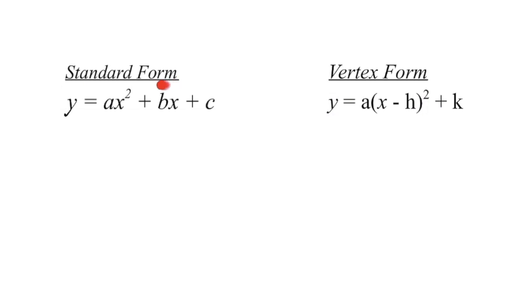Standard form is one way that we can write a quadratic function, and vertex form is another. We can see that in each of those functions they have an independent variable x and a dependent variable y. They also each have a variable a, and a does the same thing in each case — it controls the direction of opening, and it also tells us how wide or narrow that parabola is.